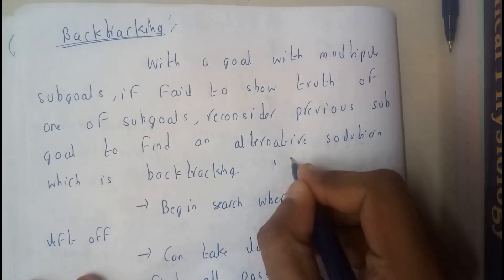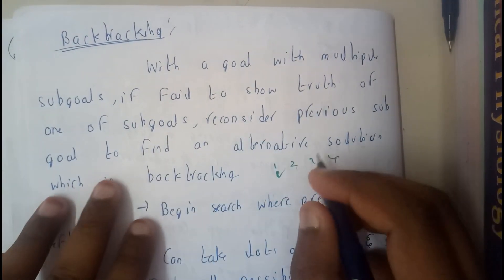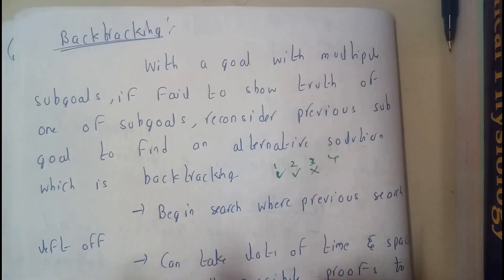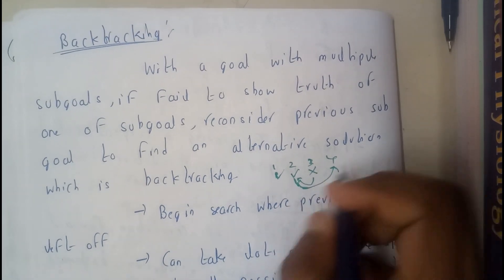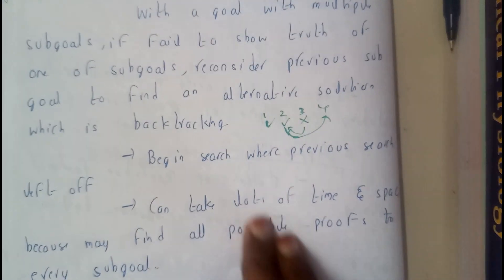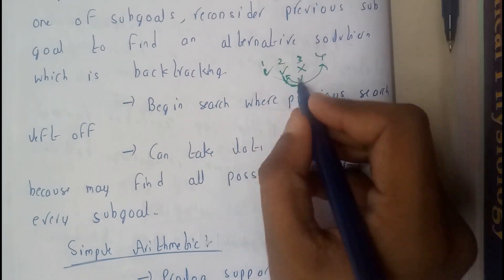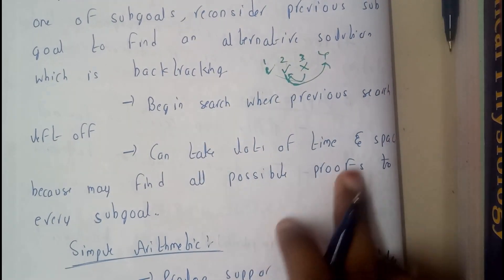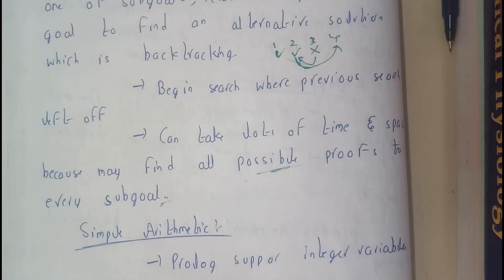For example, assume there are goals one, two, three, and four. Goal 1 is completed and true, goal 2 is also correct, but goal 3 has some error. So we go back to the previous goal and search for an alternate method to reach goal 4. This is backtracking — moving back and forward between goals. The search begins where the previous search left off, and it can take a lot of time as it moves continuously until the error is rectified.